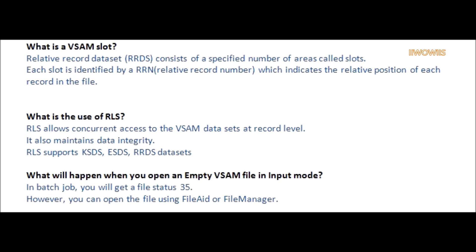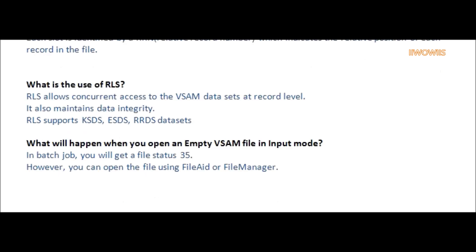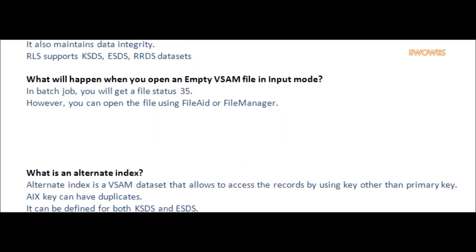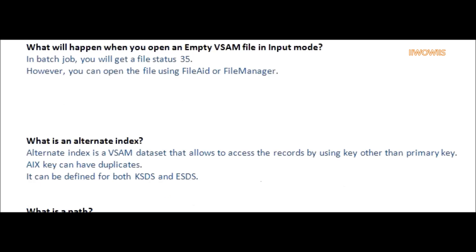Question: What will happen when you open an empty VSAM file in input mode? Answer: In a batch job, you will get a file status 35. However, you can open the file using File Aid or File Manager.